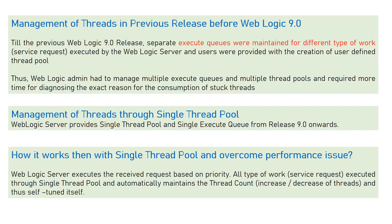As explained in part four, in WebLogic you have external requests coming from external clients and internal requests as well — your admin server talking with managed servers, one managed server talking to another. Prior to 9.0, there were different queues for internal requests and different queues for external requests, with threads getting assigned to those different execute queues. From 9.0 onwards, it comes with a single execute queue.